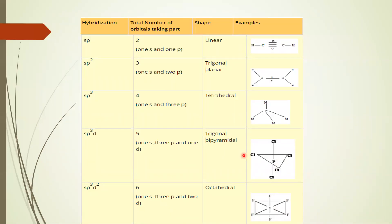So with hybridization, the total number of orbitals taking part determines each shape. We have various kinds of hybridization — SP3D and SP3D2 as well. SP3D and SP3D2 will be learned in detail in grade 12. SP3D applies to PCl5, which does not obey the octet rule yet is a stable compound — it has a trigonal bipyramidal shape. SP3D2 gives an octahedral shape, such as SF6. SP hybridization can give either tetrahedral or square planar geometry — those exceptional structures will be learned later in grade 12.